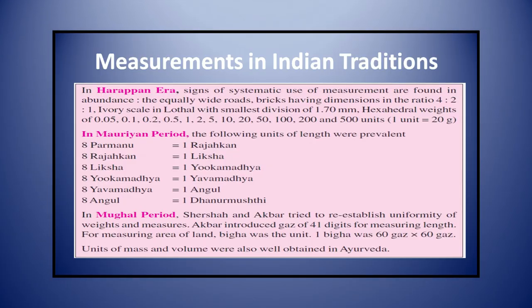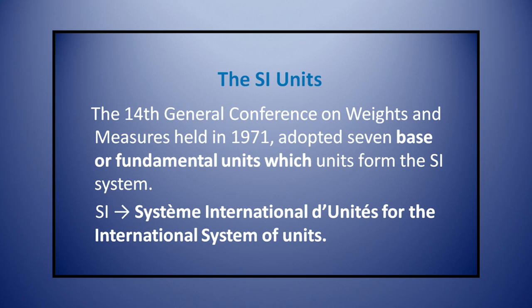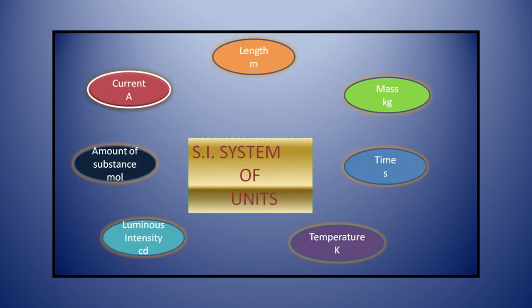Practices of systematic measurement are very old in India. You can see from the table the different units of measurement used in different periods of time in India. Now we will discuss about SI units. The 14th general conference on weights and measures, held in 1971, adopted seven base or fundamental units which form the SI system. SI means Système International — the international system of units. The SI system has seven fundamental or base units.